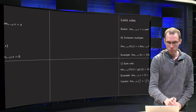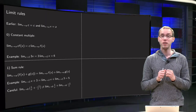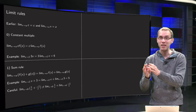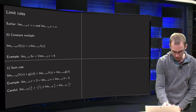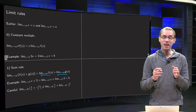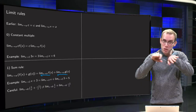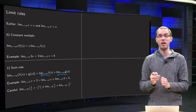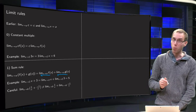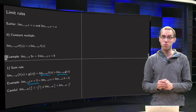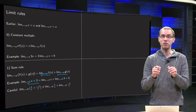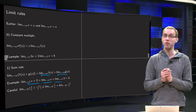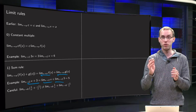That was rule zero. Rule number one: the sum rule. This one is already slightly non-trivial. If the limit x to a of f of x exists and the limit x to a of g of x exists, then the limit x to a of f plus g equals the limit x to a of f plus the limit x to a of g. For example, to compute the limit x to 2 of x plus 3, you apply the sum rule: limit x to 2 of x plus limit x to 2 of 3, which equals 2 plus 3 equals 5.